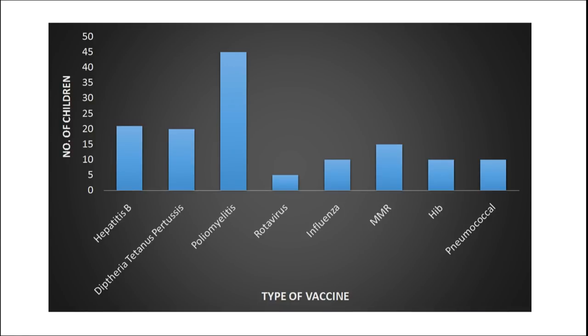This data was translated into a graph. The polio vaccine was given the most — to almost 43 infants and children — while rotavirus was given to just 5, which tells us that the community is still not fully aware and educated about vaccines. If a teacher is vigilant, they can initiate these community-based projects, which give a lot of first-hand learning to children that is very difficult to acquire in the classroom.